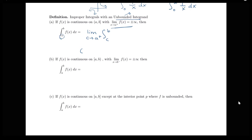Remember, we have this interval from a to b, and a is the problem value. We need to be approaching it from inside the interval, so we approach it from the right. We'll have the limit as c goes to a from the right of the integral from c to b of f of x dx. We do normal integration on the integral from c to b, and then take our limit to find the value of the improper integral.